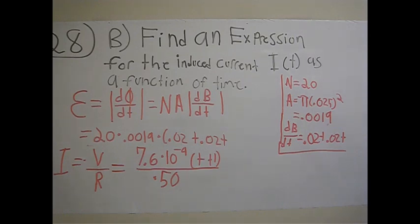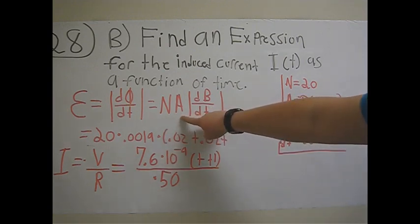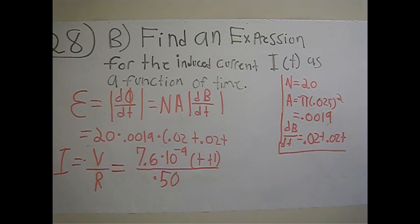Substituting in, we can equate it to the number of turns in the coil times the area times dB/dt.